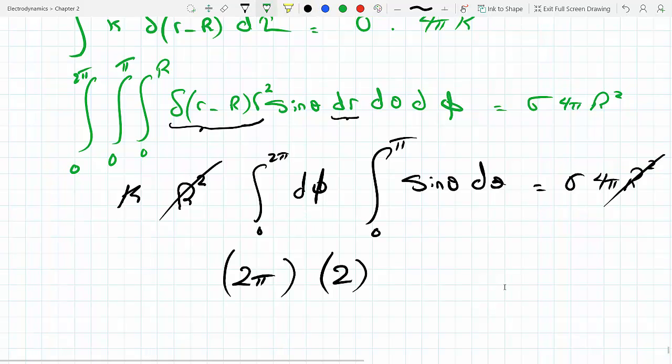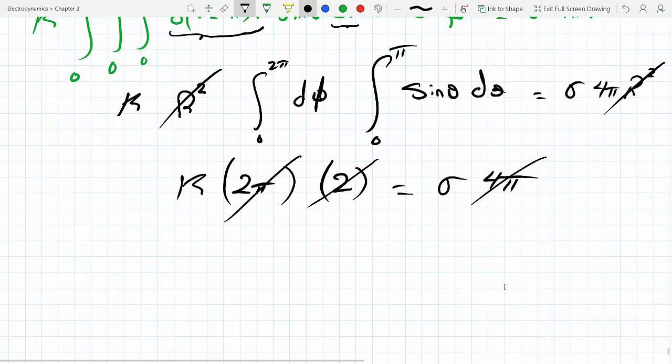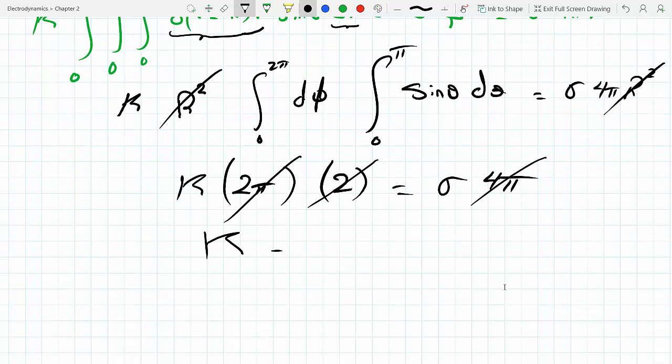There was a K here, we're trying to find what that K is. So K times 2π times 2 has to equal sigma times 4π. Notice that the 4π crosses out with 4π, and I get my K to equal sigma.